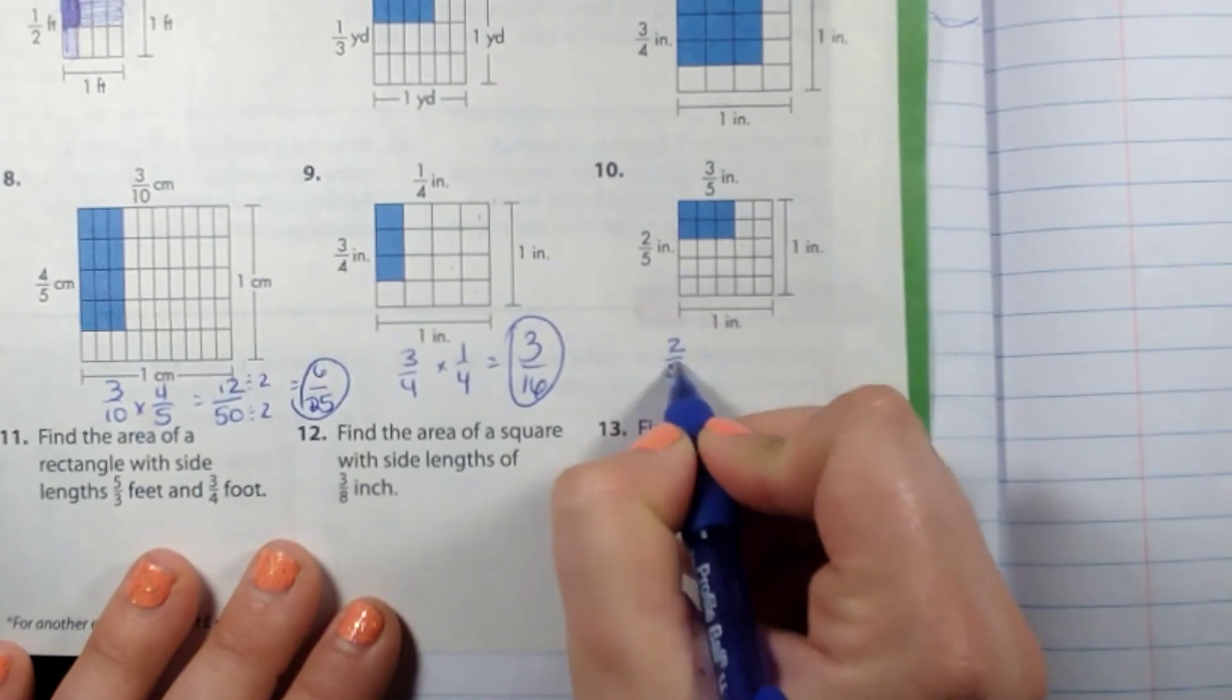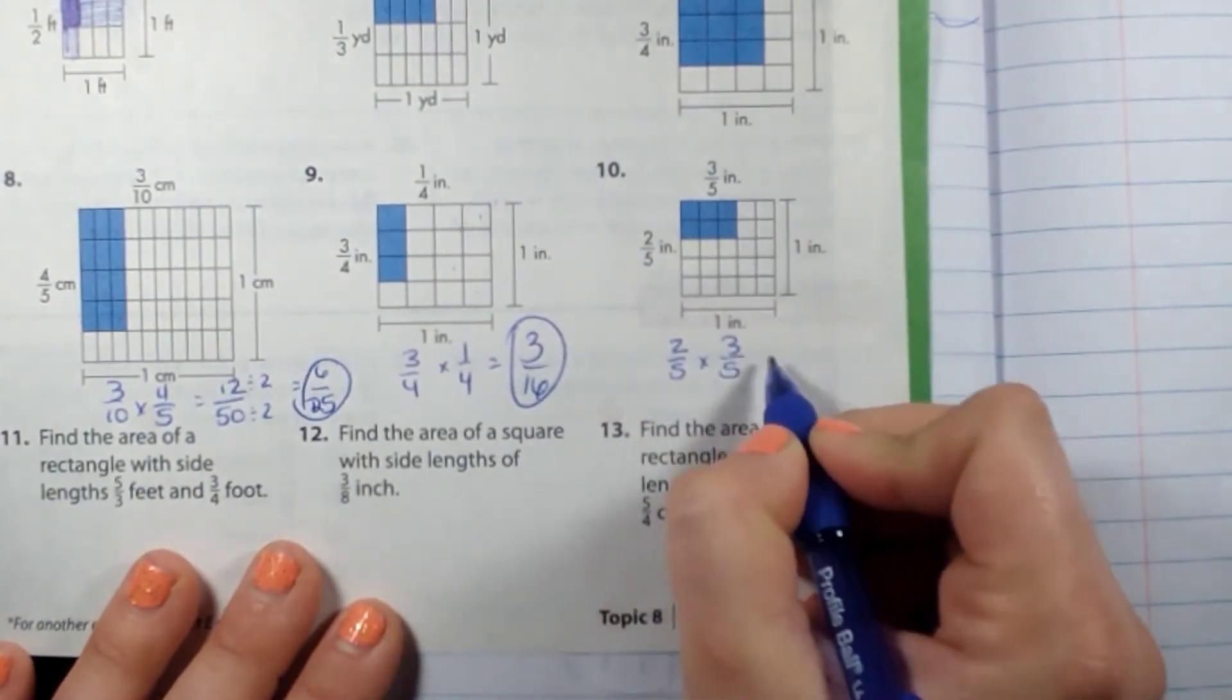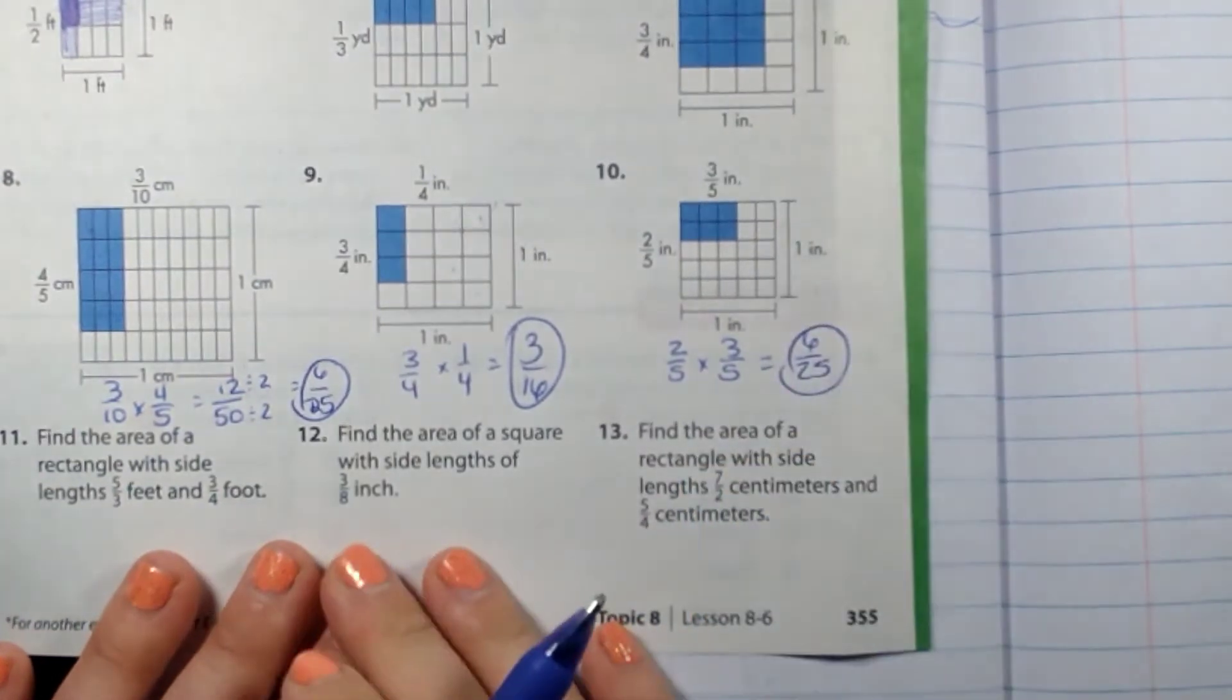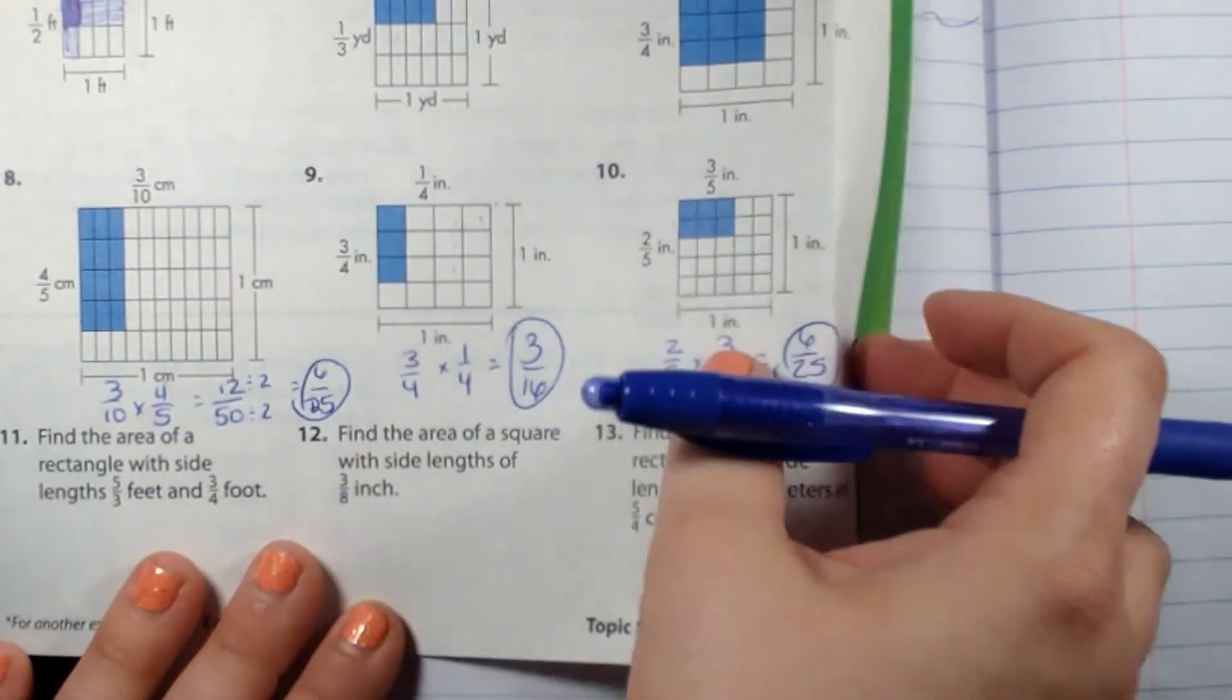The next one would be two fifths times three fifths equals six twenty-fifths.